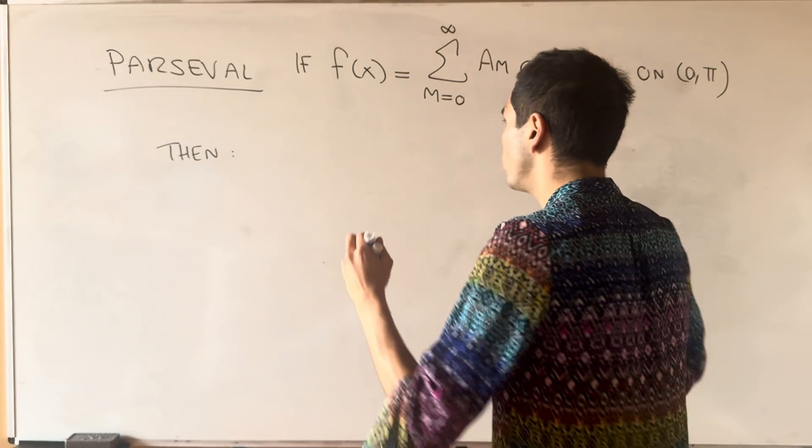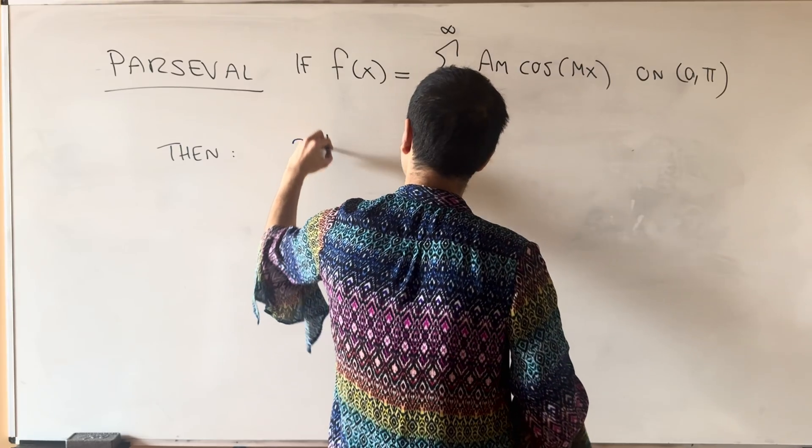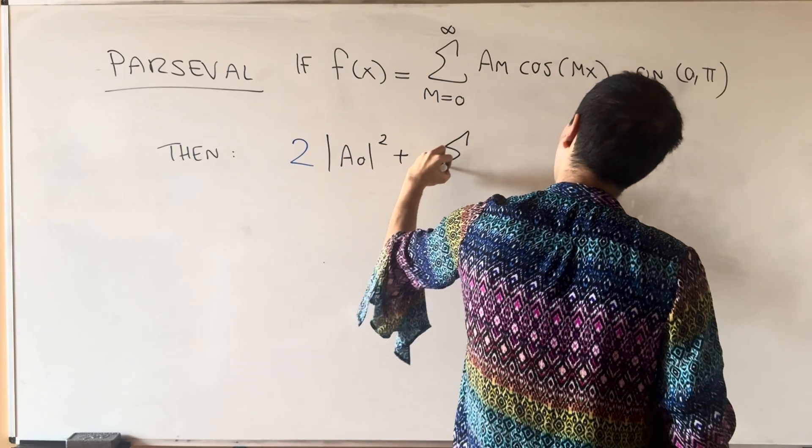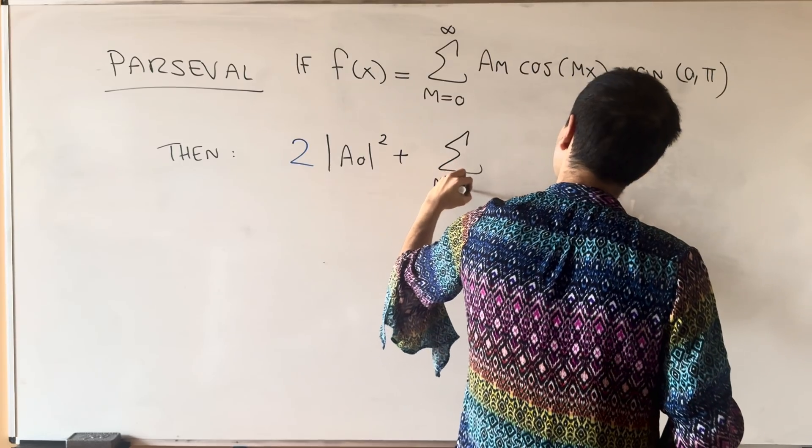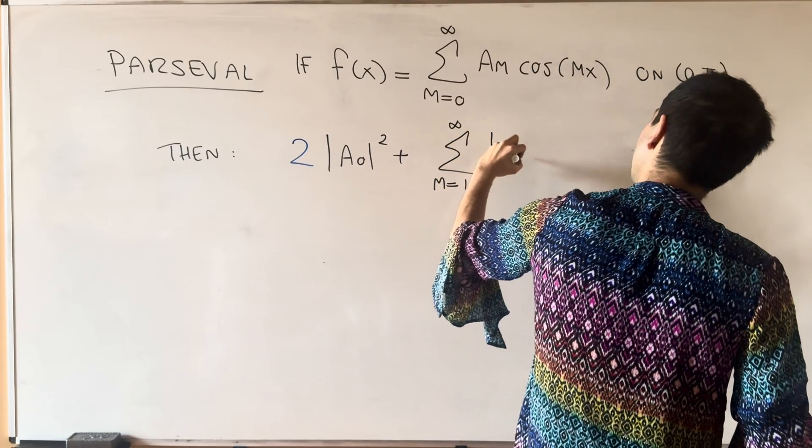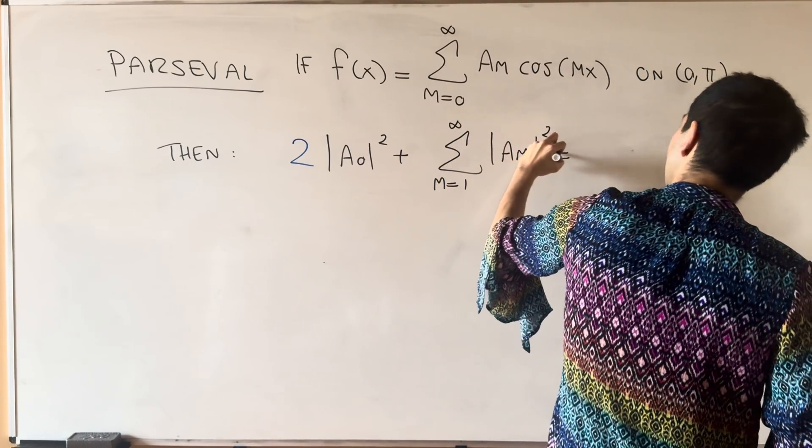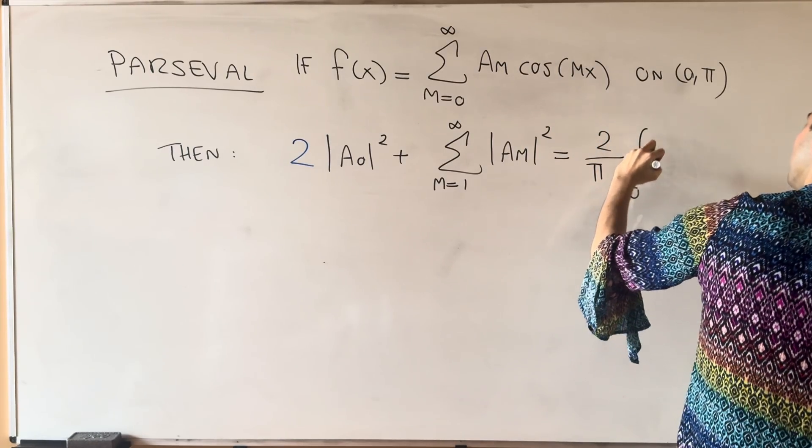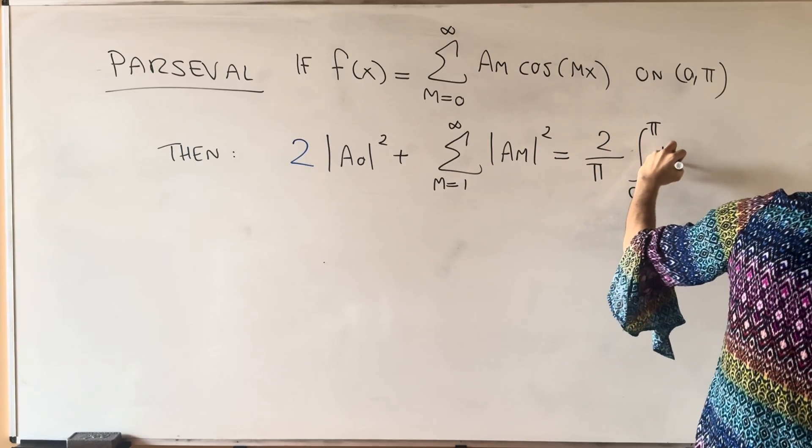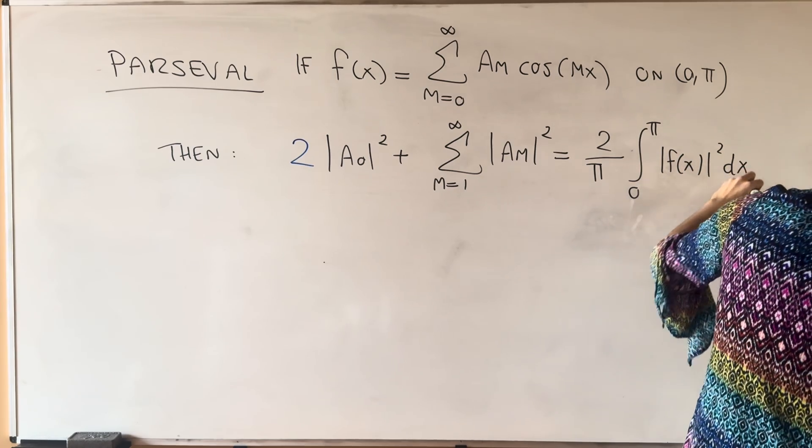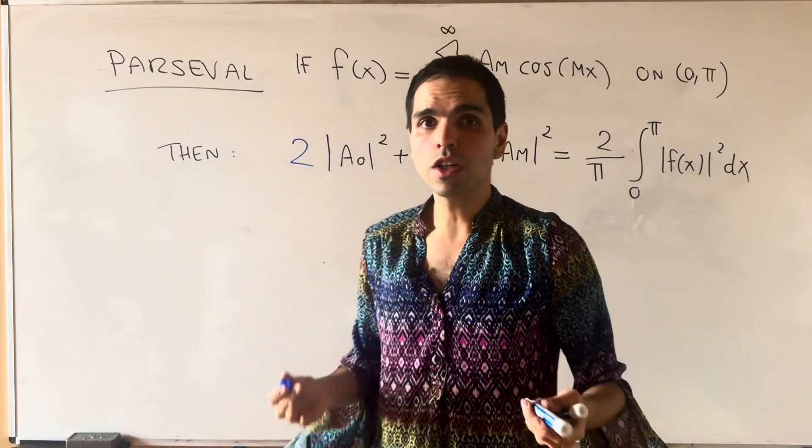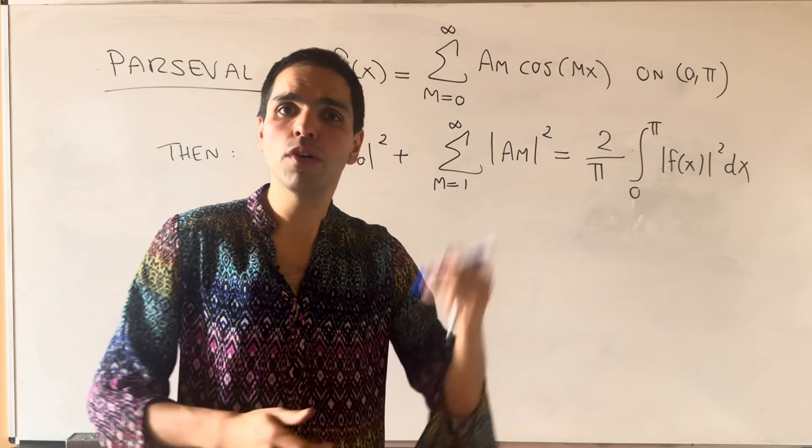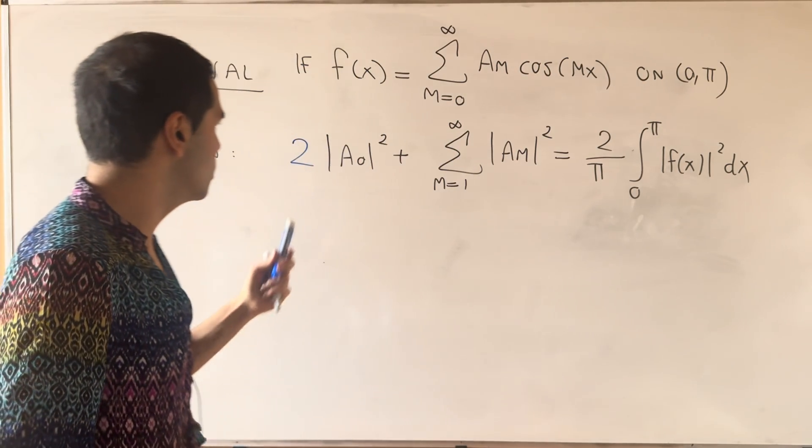We get that 2 times a_0 squared, and then plus sum from 1 to infinity of a_m squared, and now it's still 2 over pi, times the integral from 0 to pi of f of x squared.